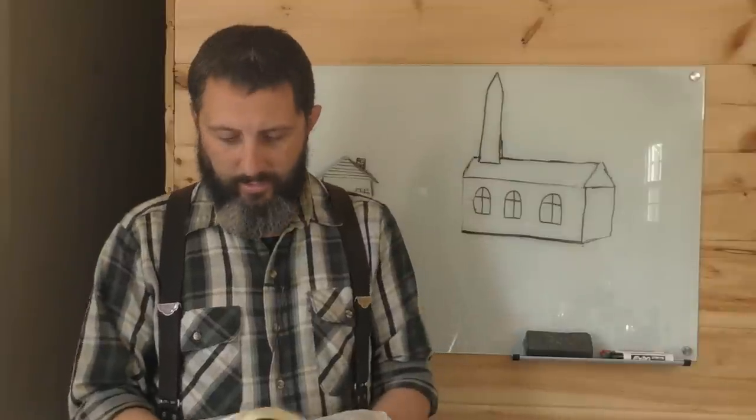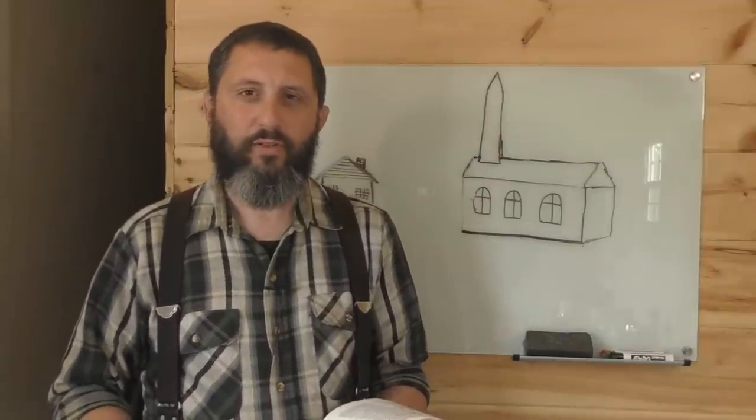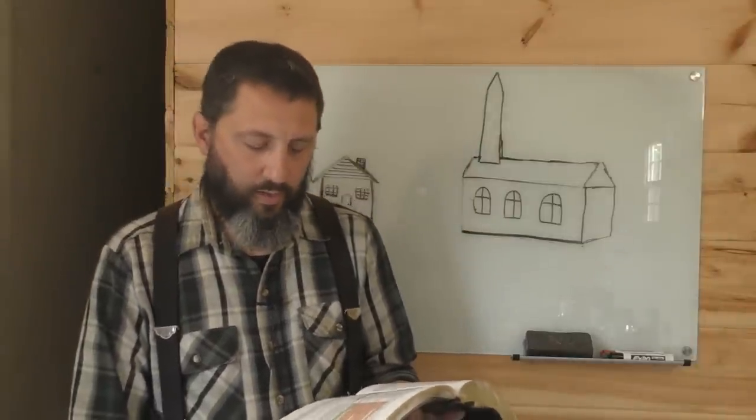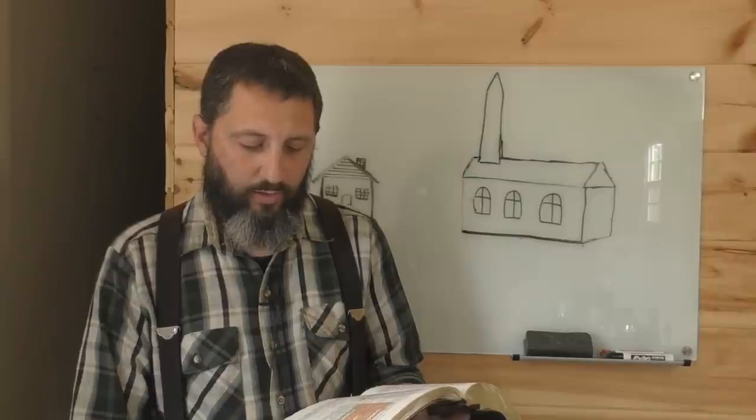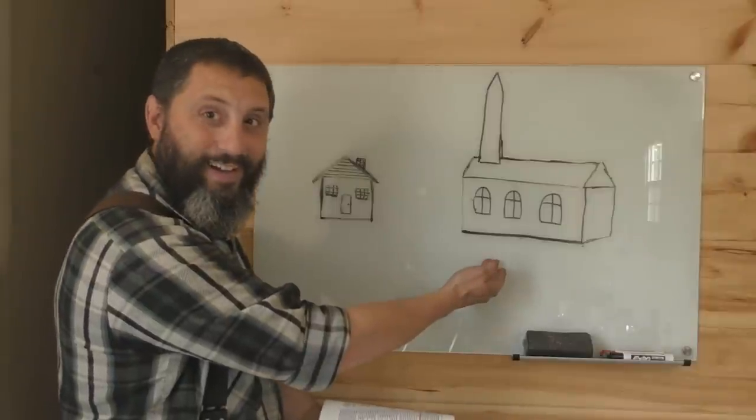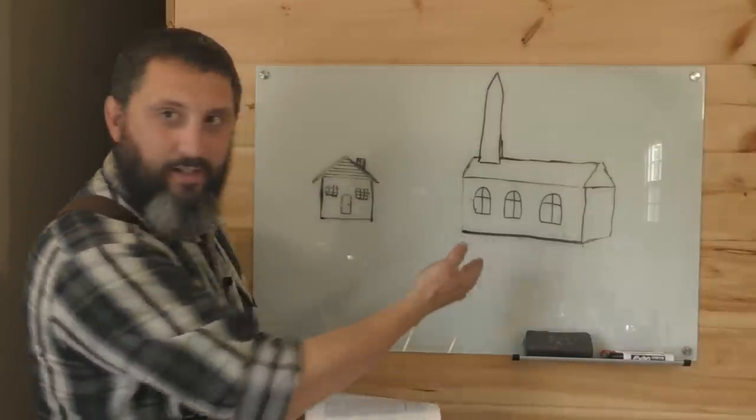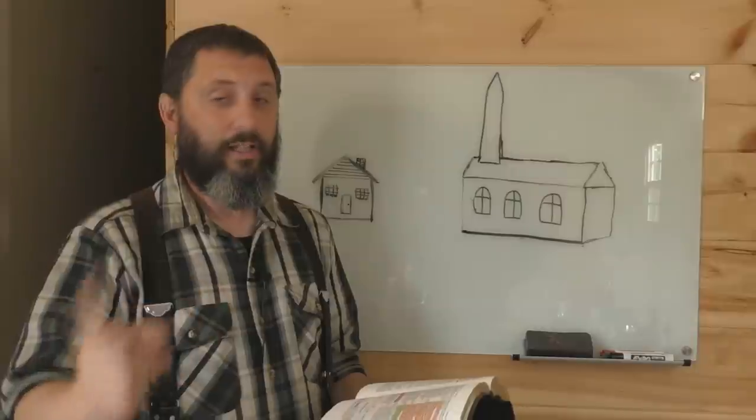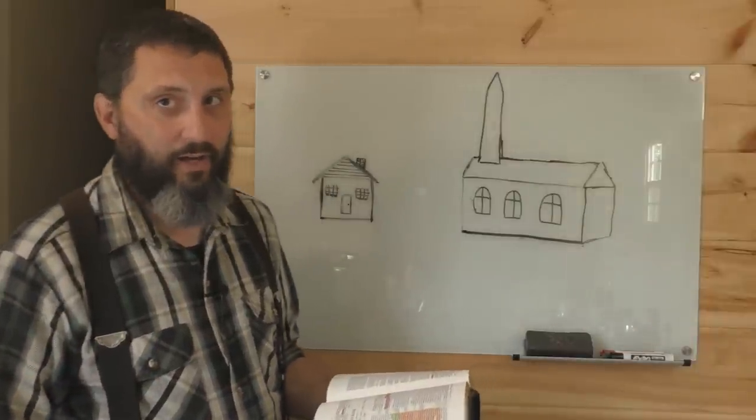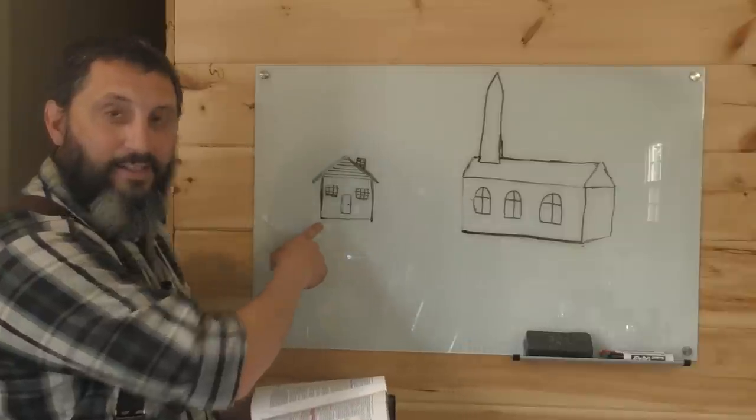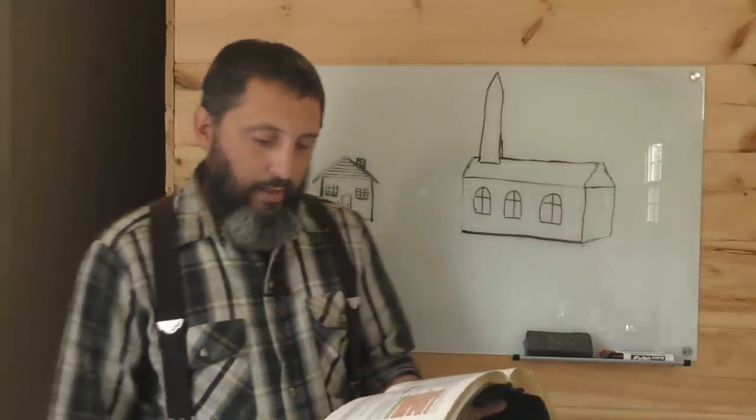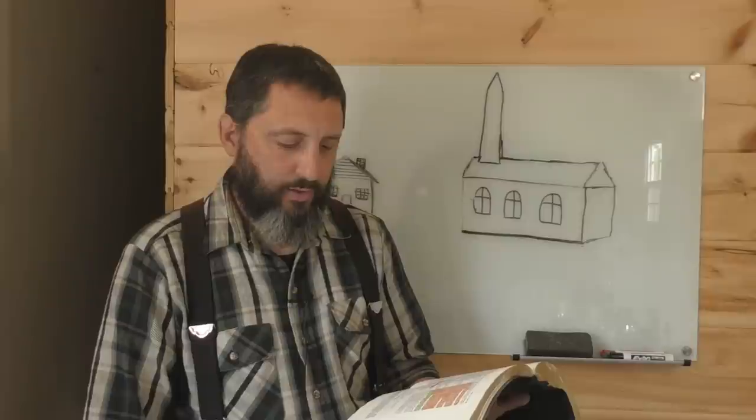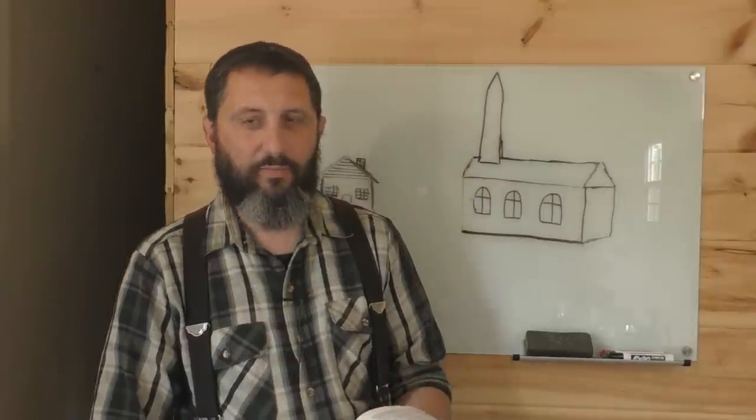Do you have any scripture that proves that you should be doing things from home? Yes, actually, I do. The verses that prove that what I do for a living is perfectly fine according to the scriptures. Acts chapter 28, verse 30 and 31. And Paul dwelt two whole years in his own hired house and received all that came in unto him, preaching the kingdom of God and teaching those things which concern the Lord Jesus Christ with all confidence. No man forbidding him.